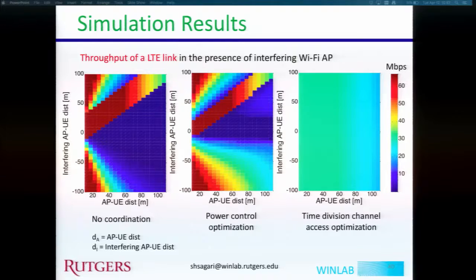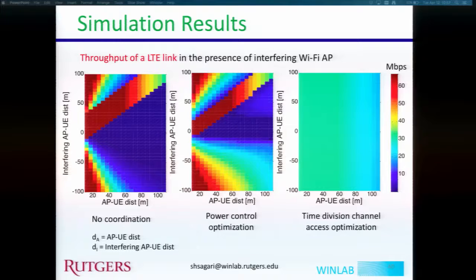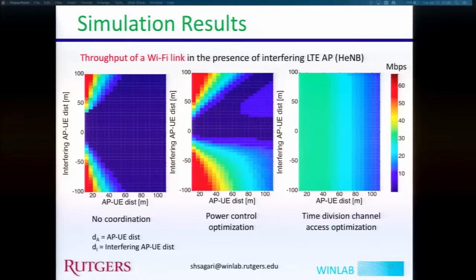A question was raised about whether changing CCA sensitivity would impact more data points from a throughput perspective. That study was not done, but it can be done easily by changing the sensitivity threshold and observing effects on both systems. The corresponding plots showing Wi-Fi versus LTE throughput are for the same topology but with roles reversed — the trends are consistent in both directions.